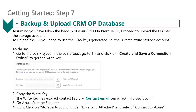After reaching out to the Microsoft factory team and receiving their response, it is now time to back up and upload the CRM on-premise database. Once you have taken the backup, proceed to upload the database. Go to your LCS project, select step 1.7, and click on Create and Save a Connection String to get the right key. Copy the right key — note the key is typically valid for about 24 to 48 hours. If the key is expired, contact Microsoft using the provided email address.